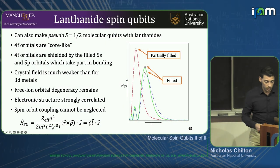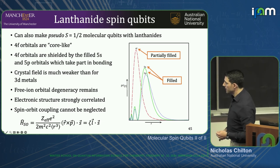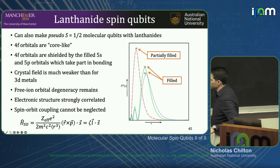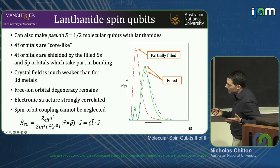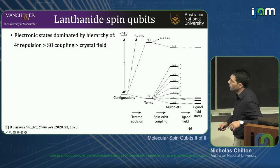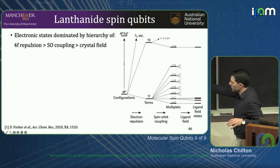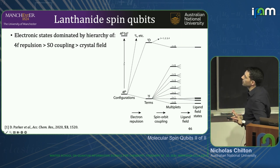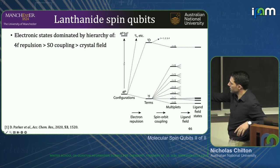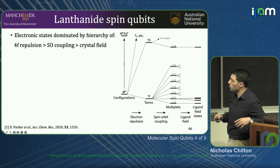Spin-orbit coupling is a non-negligible perturbation in the ground state. It scales with the mass of the nucleus, and for the lanthanides, which are rather heavy, this is important. We also have a first-order orbital contribution to the magnetic moment. This hierarchy of electronic structure — the 4F inter-electronic repulsion splits your configuration into Russell-Saunders terms with well-defined total spin and total orbital angular momentum, which is then split by spin-orbit coupling into total J angular momentum multiplets.